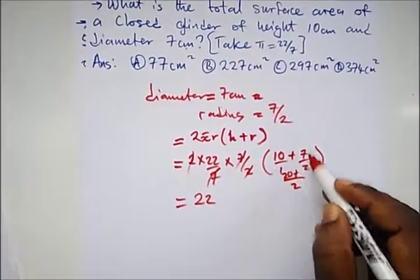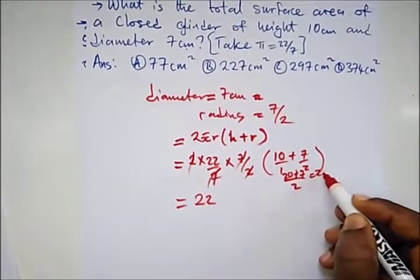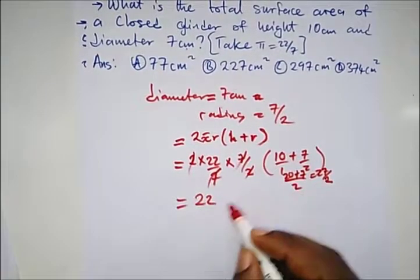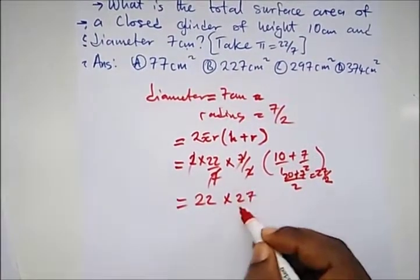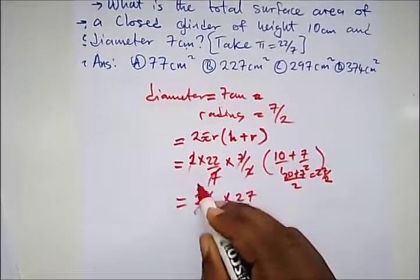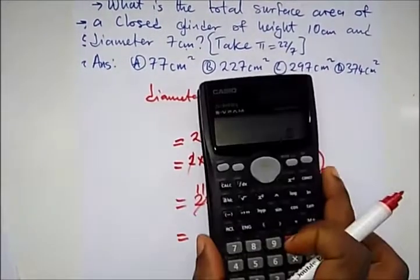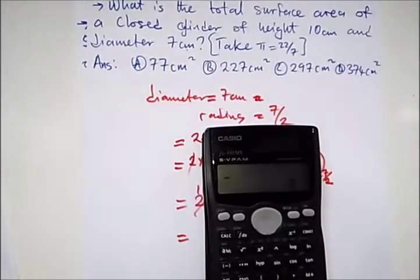So all we need to do is bring this out. So this is 27 over 2. This will cancel this, this cancel this, that's 11. 11 times 27, all this give us, I don't know if you can see the calculator clearly, it's going to give us 297.